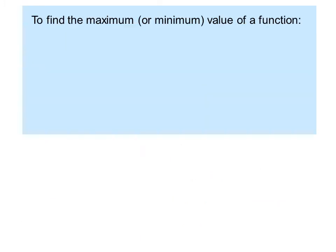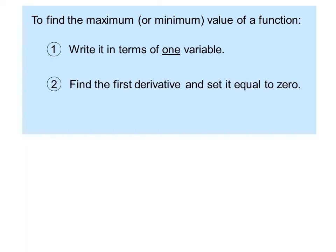To find the maximum or minimum value of a function: Step 1, write it in terms of one variable. Step 2, find the first derivative and set it equal to 0. Step 3, check the endpoints if necessary.